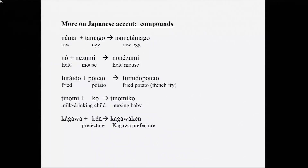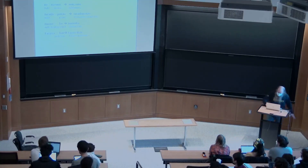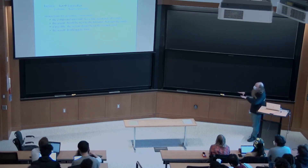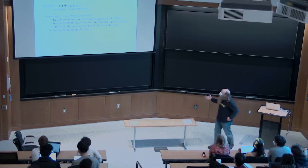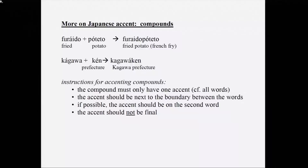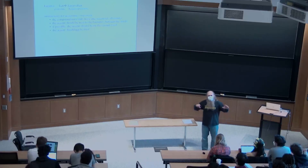The general pattern is what you get in 'french fry' — accent at the beginning of the second half of the compound, 'potato.' You can see it in 'raw egg' — it's at the beginning of 'egg' — and in 'field mouse' at the beginning of 'mouse.' But there's a coherent class of exceptions: if the second half of the compound is only one syllable long, you put the accent at the end of the first half.